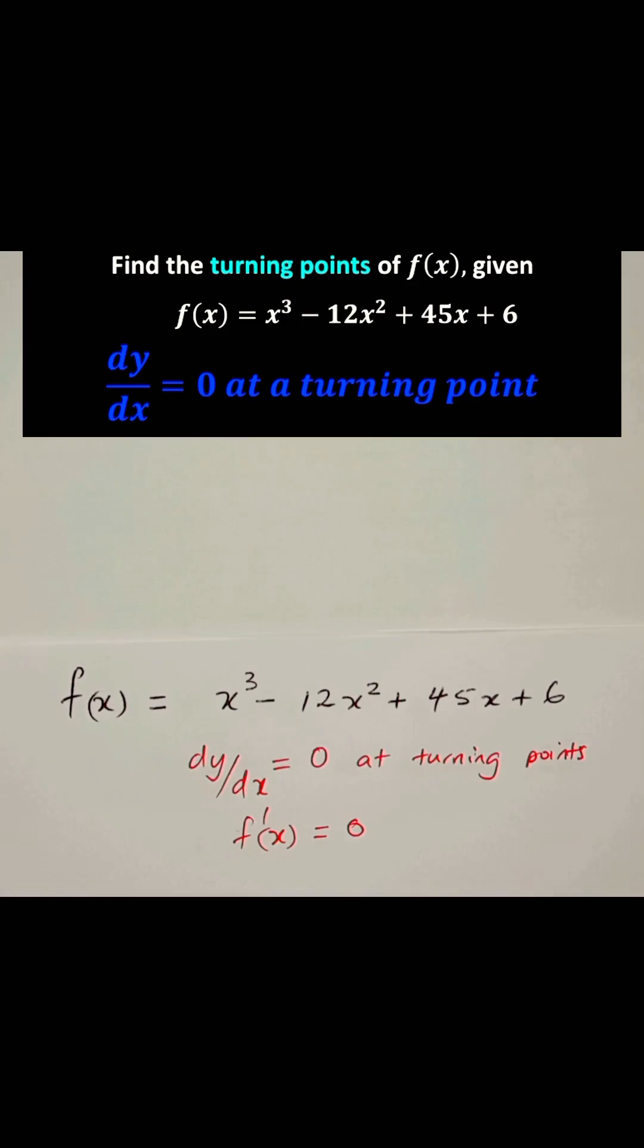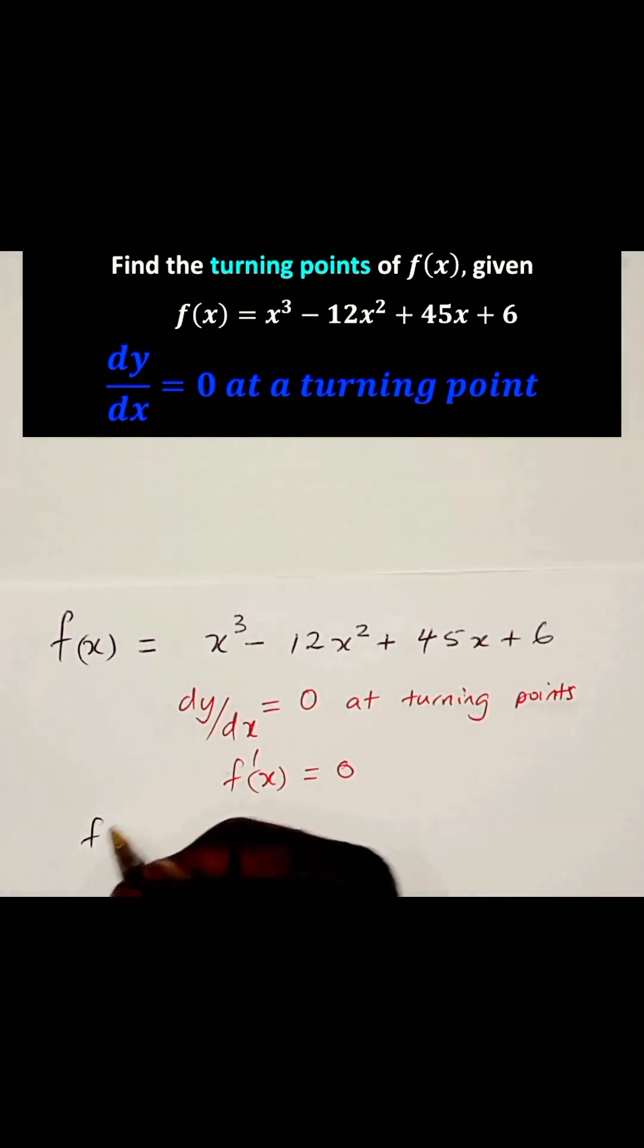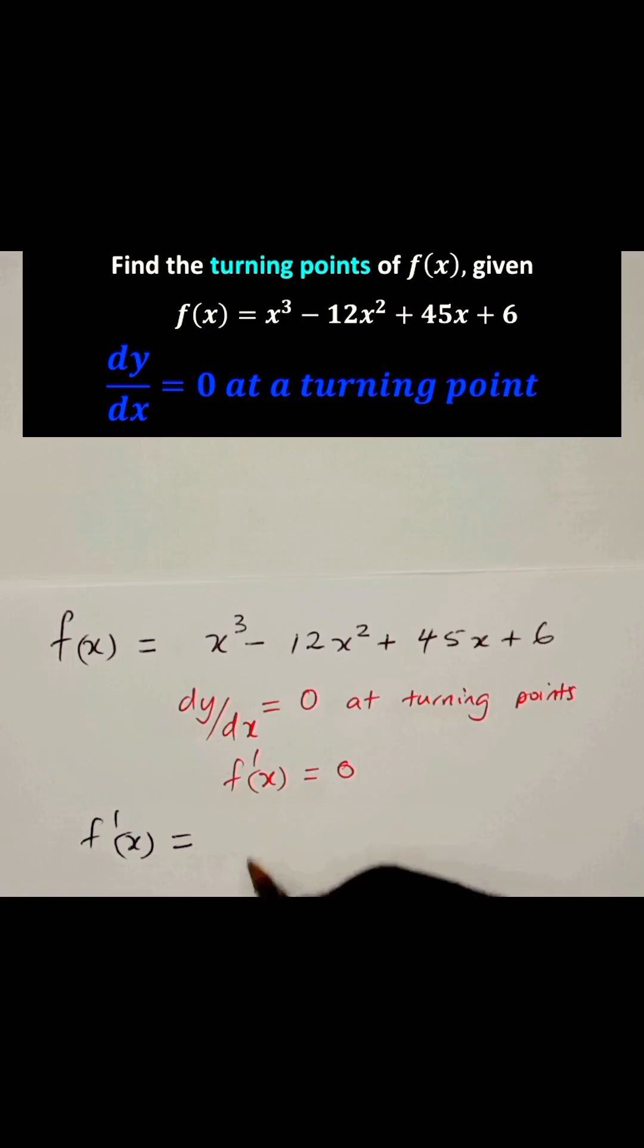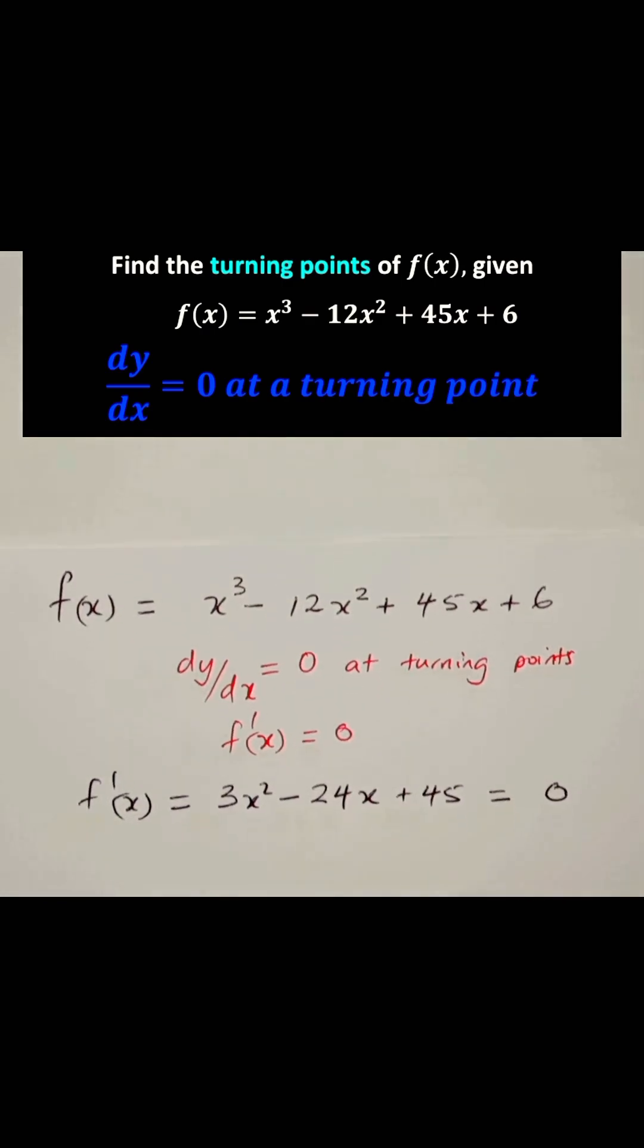Now, let's differentiate f(x) with respect to x. In other words, we're looking for f'(x). So from this, we say f'(x) is equal to 3x² - 24x + 45, and that is equal to 0 at the turning points.